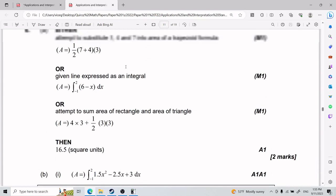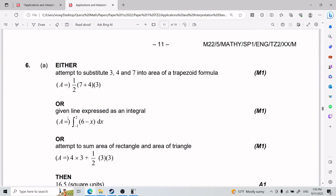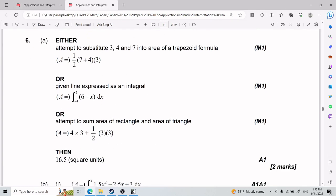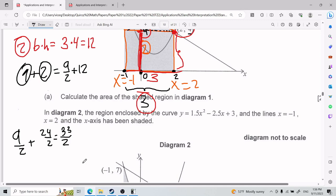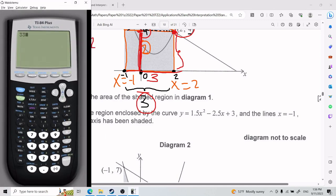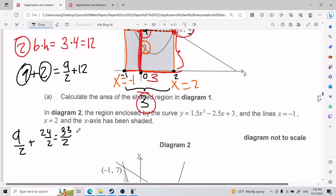So we go ahead and check the answer key over here: 16.5. 33 divided by 2 gives me 16.5. So that is for part A.